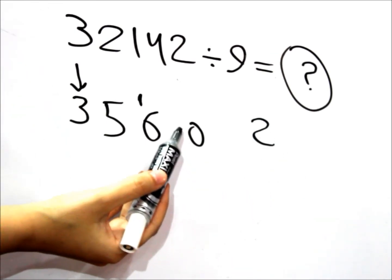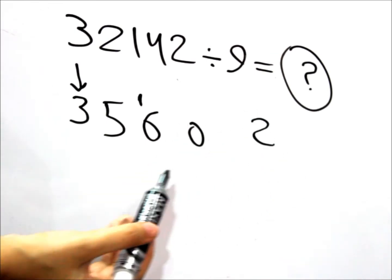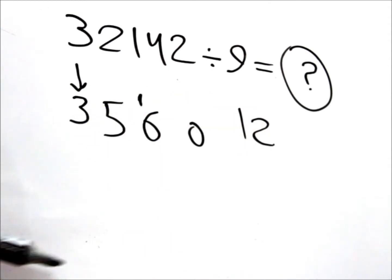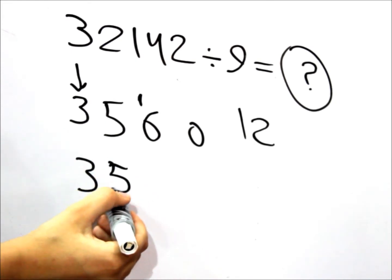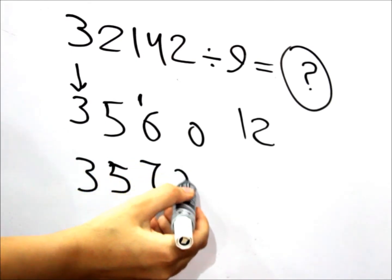And don't forget, this is not a 0. This is a 10. So the remainder is not 2. Actually, it's 12. So what we're going to do here is we're going to write the answer. It's 3, 5, 7, 0.